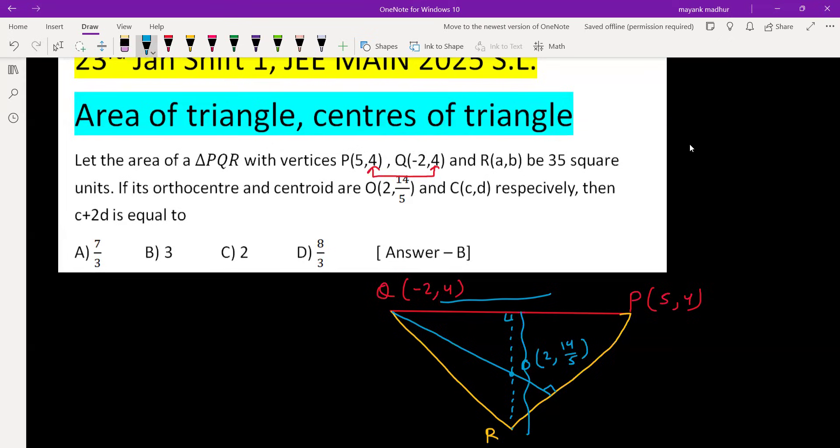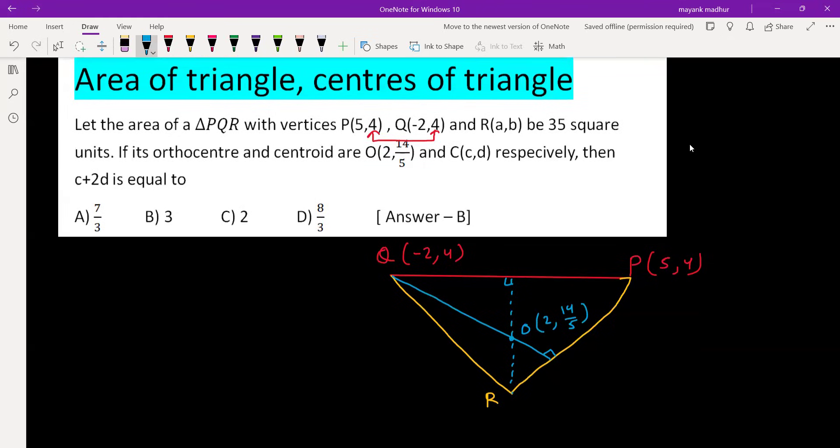Since this is a vertical line, it will have the same x-coordinate as O. So R is having x-coordinate 2. It's a vertical line; any point on this line will have the same x-coordinate.